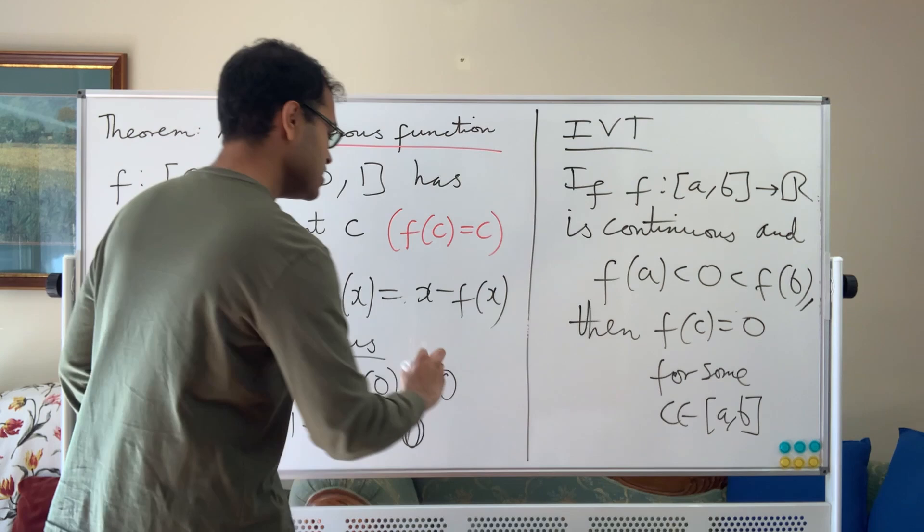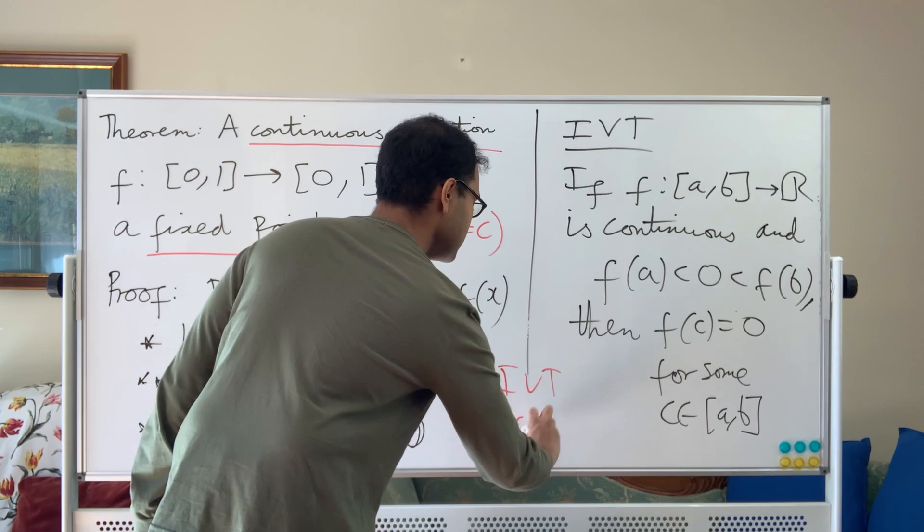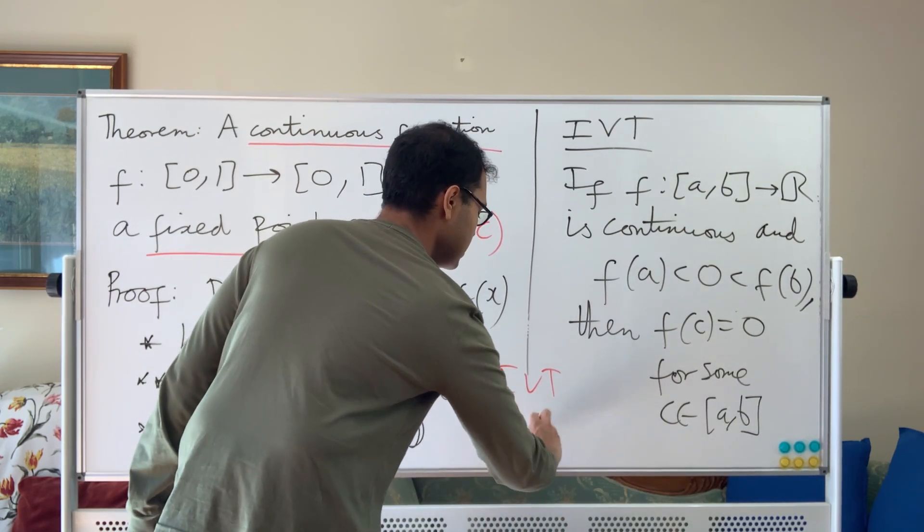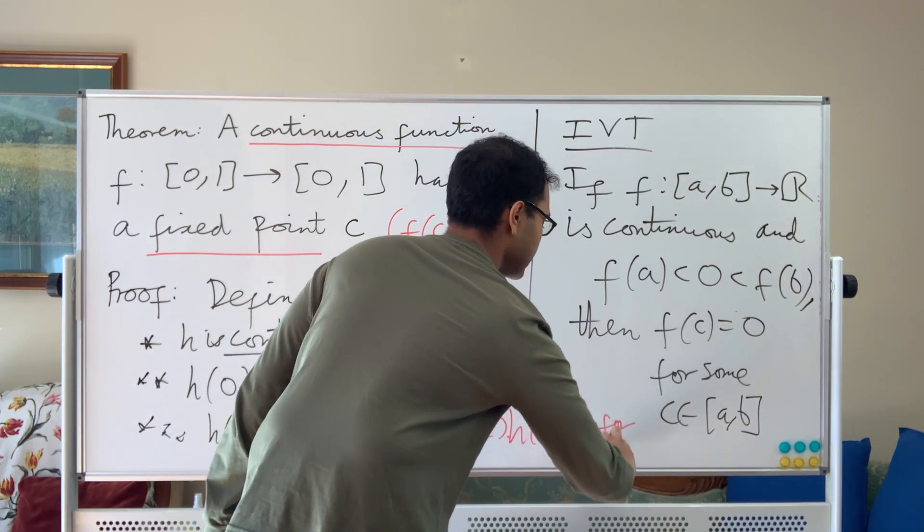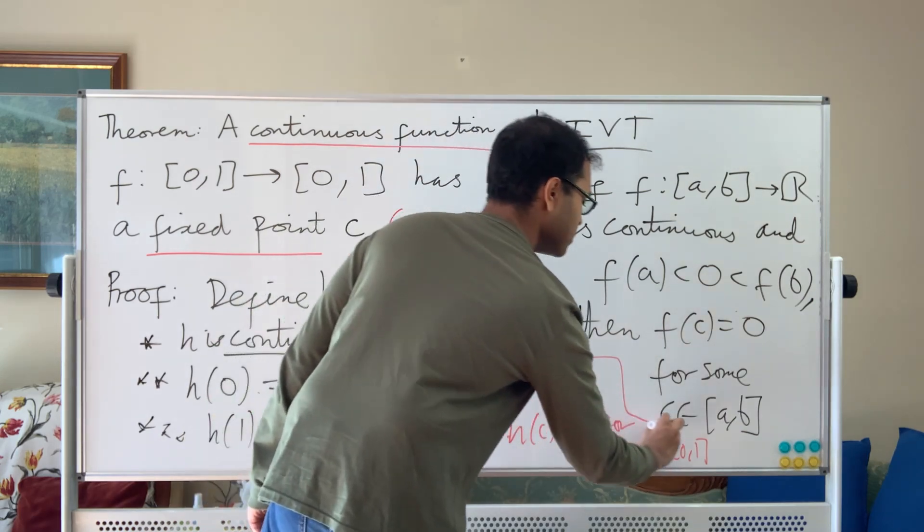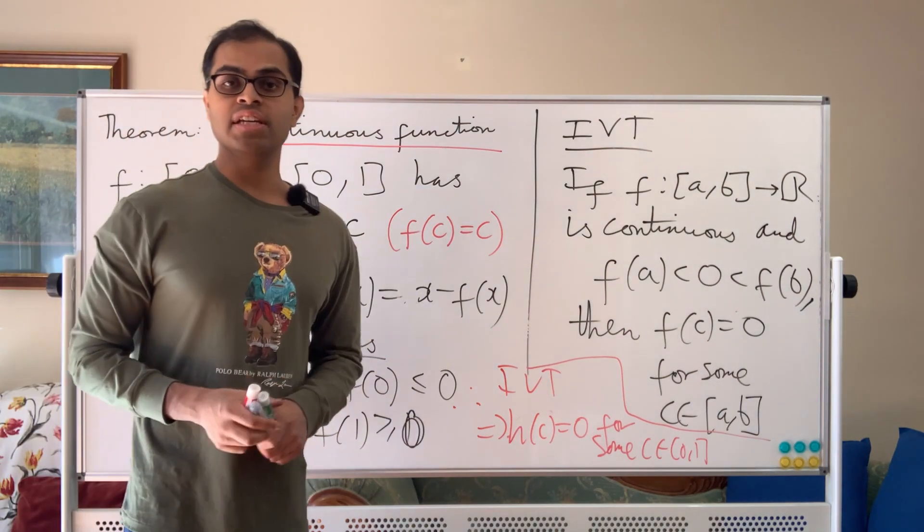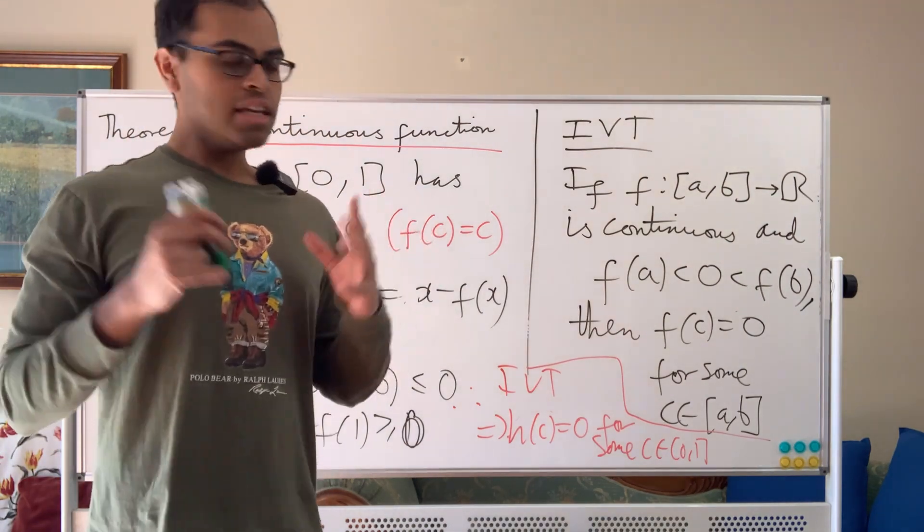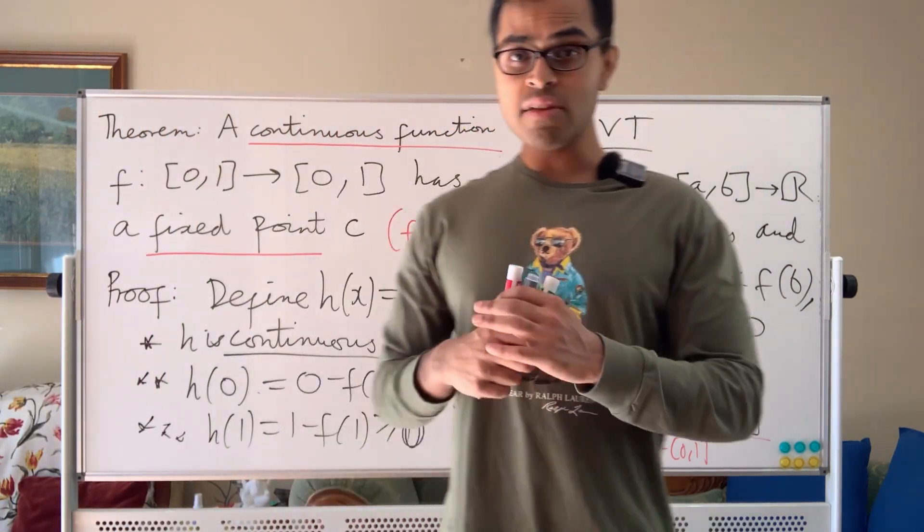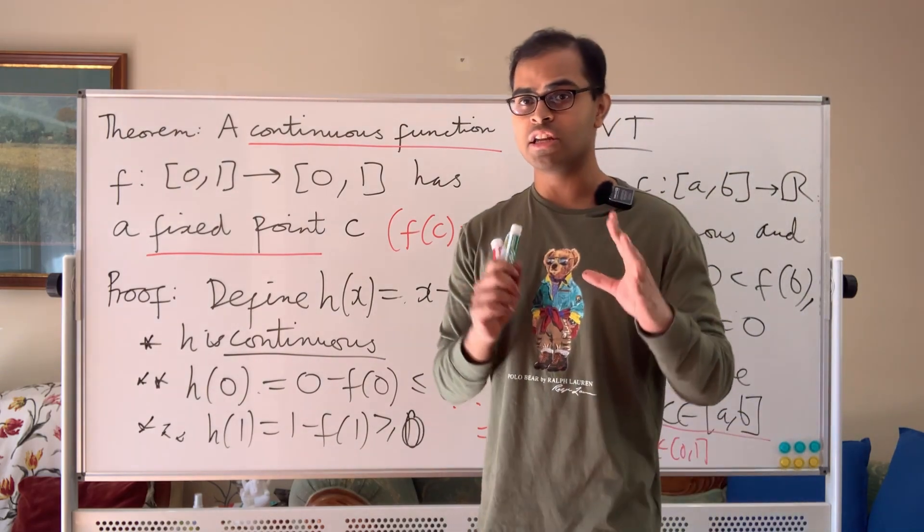Then we apply IVT. Therefore, IVT implies that h(c) equals 0 for some c inside the interval [0,1]. And now that we know that, we can conclude that if h(c) is 0 for some c in [0,1], then c minus f(c) is 0, or in other words, c equals f(c). So that is the theorem, that's the proof. We've proved it using the IVT, the intermediate value theorem. The intermediate value theorem is a formal result that needs justification. It's intuitively obvious, but needs justification, but is a powerful tool.